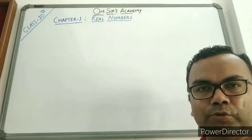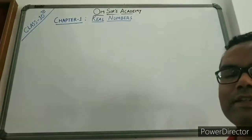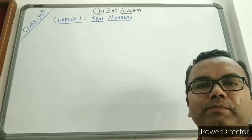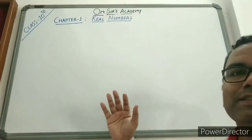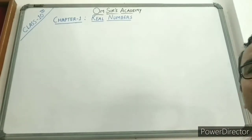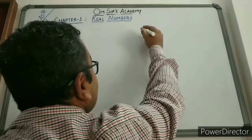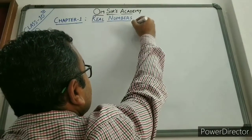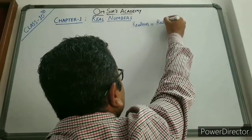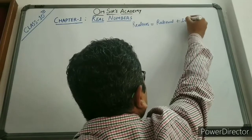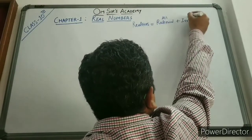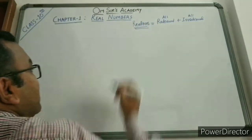Today we are going to learn about Class 10th first chapter, that is Real Numbers. We have already learnt the Class 9 number system as the first chapter. This chapter is the extension of that chapter. The real numbers are those numbers which are called as rational plus irrational — a combination of all rational as well as all irrational numbers forms the real numbers.